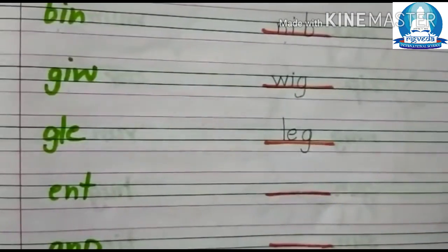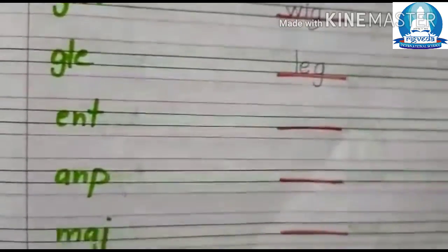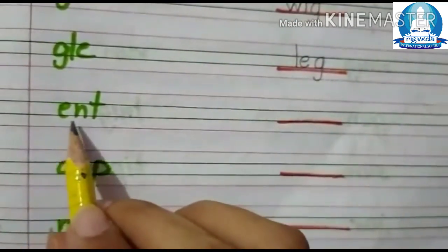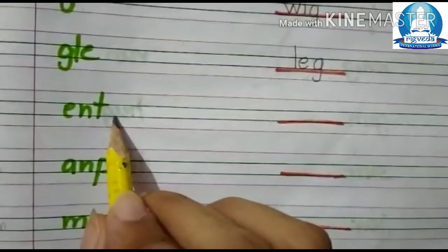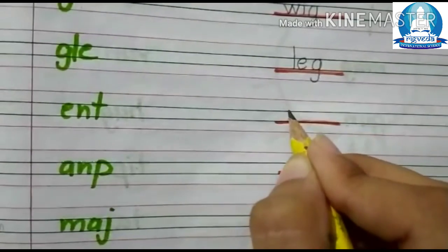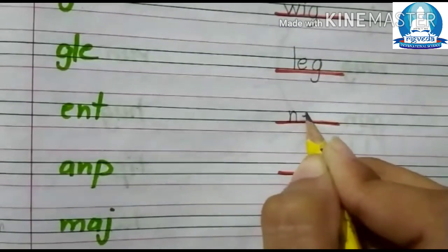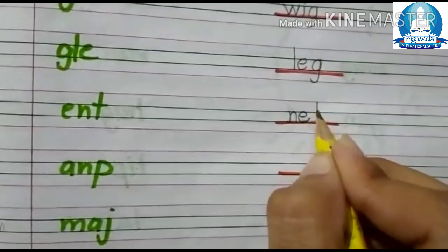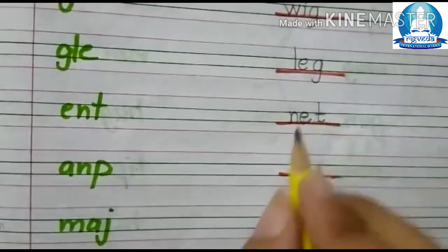Next is E, N, T. We will make Net. N, E, T. Net.